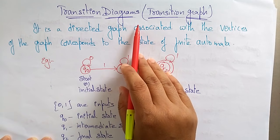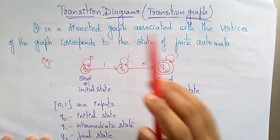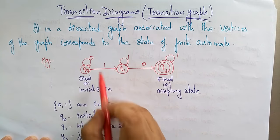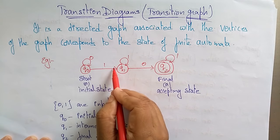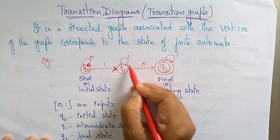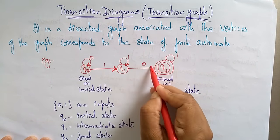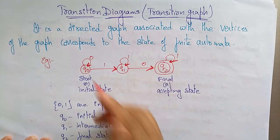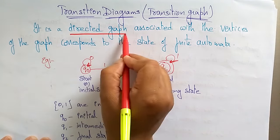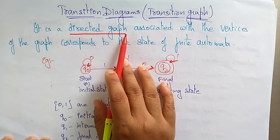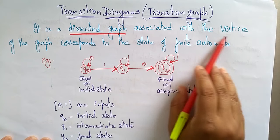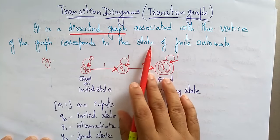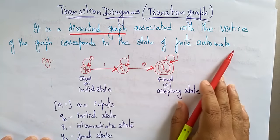The transition diagram is also called a graph — specifically a directed graph. Directed means it should be pointing to some state. It is a directed graph where the vertices of the graph correspond to the states of a finite automata.